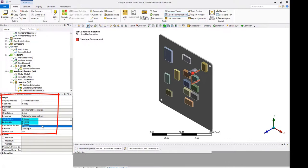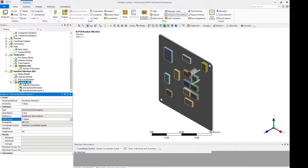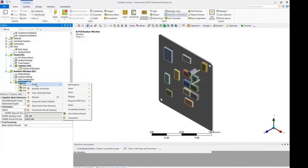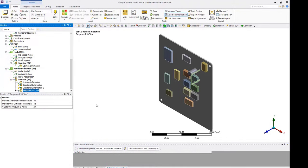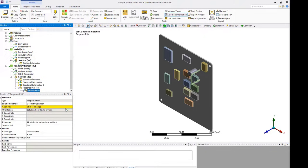We right-mouse click on the solution branch and insert a response PSD tool. Scope the response PSD to a vertex on the PCB board and extract the z-component of displacement.